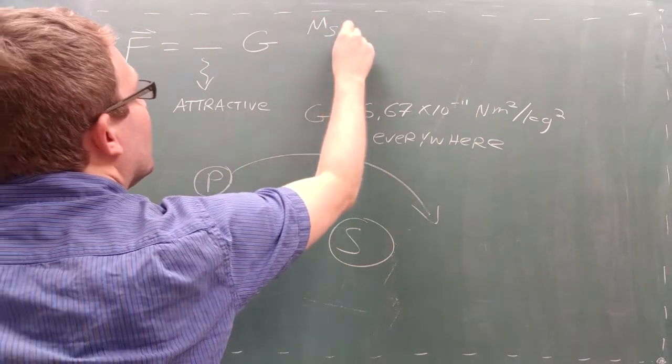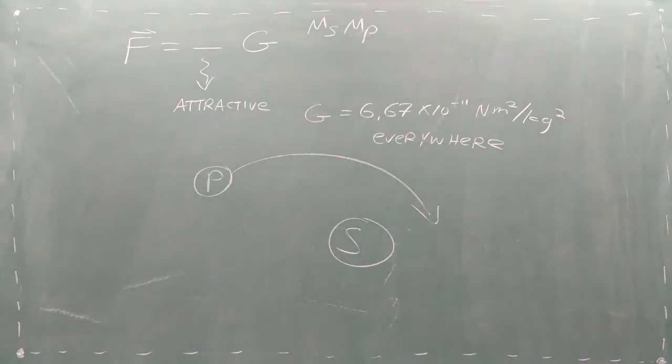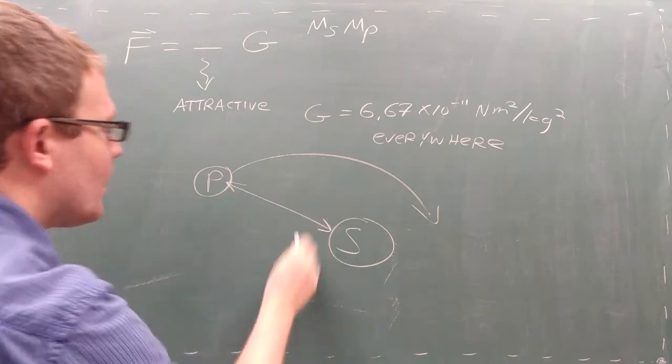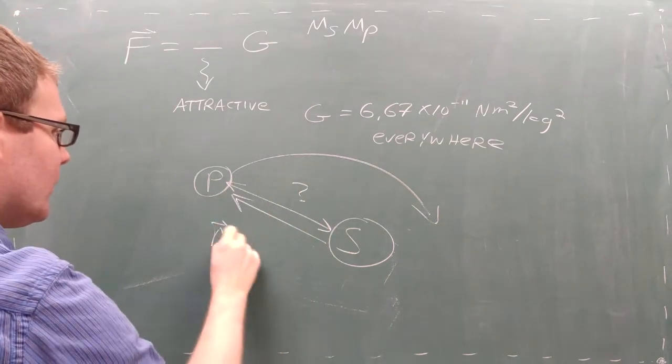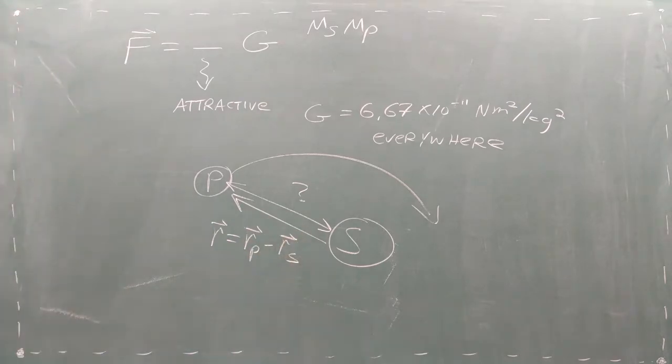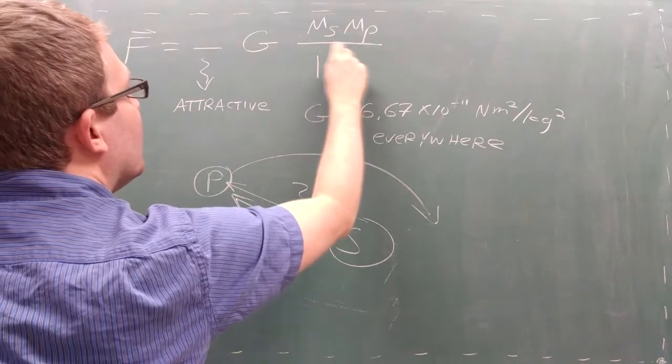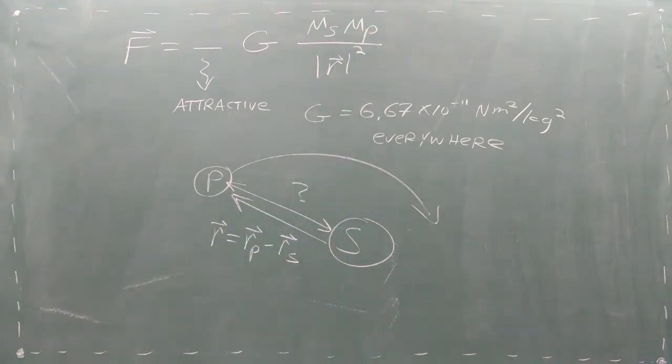Next, we multiply the mass of the star times the mass of the planet. Next, we need to think about the distance between the star and the planet. We can get a distance vector that points from the star to the planet by subtracting their positions. The magnitude of this distance vector goes into the denominator of the gravitational force.